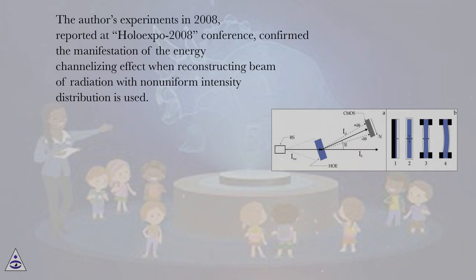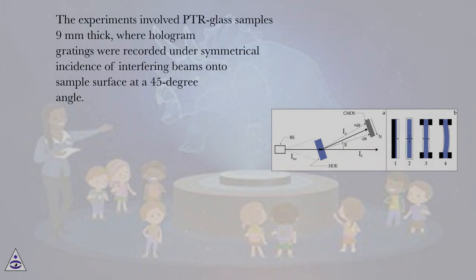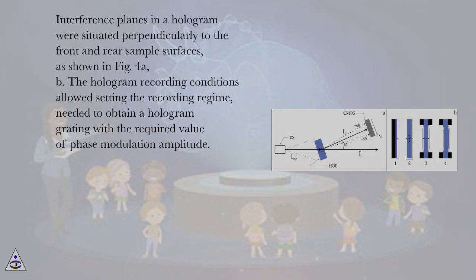The author's experiments in 2008, reported at HoloExpo 2008 conference, confirmed the manifestation of the energy channelizing effect when a reconstructing beam of radiation with non-uniform intensity distribution is used. The experiments involved PTR glass samples 9 mm thick, where hologram gratings were recorded under symmetrical incidence of interfering beams onto the sample surface at a 45-degree angle. Interference planes in the hologram were situated perpendicularly to the front and rear sample surfaces, as shown in figure 4a and b. The hologram recording conditions allowed setting the recording regime needed to obtain a hologram grating with the required value of phase modulation amplitude.